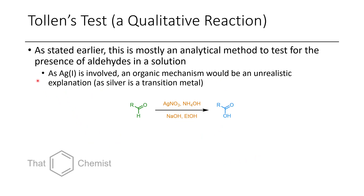The final method worth noting is the Tollens test. As stated earlier, this is mostly an analytical method — the type of thing you do to check if the product you formed happens to be an aldehyde when you don't have equipment like FTIR or NMR. The disadvantage is that you have to use a stoichiometric amount of silver. I won't draw a mechanism, as silver(I) is involved and transition metals often undergo much more complex mechanisms. I also won't show examples because this is fairly obscure and not a common synthetic transformation.